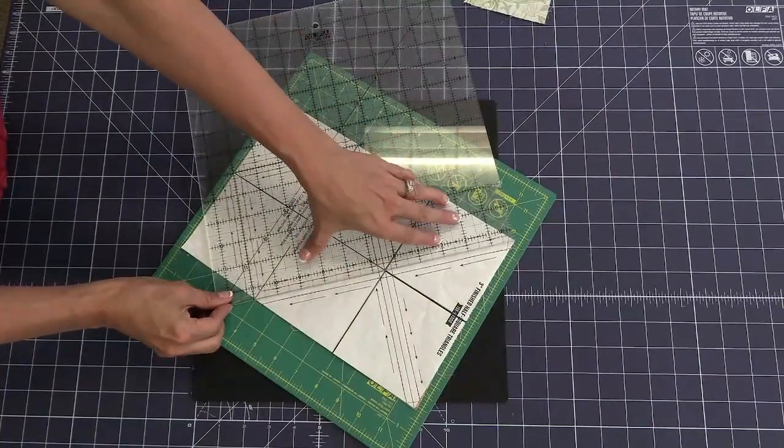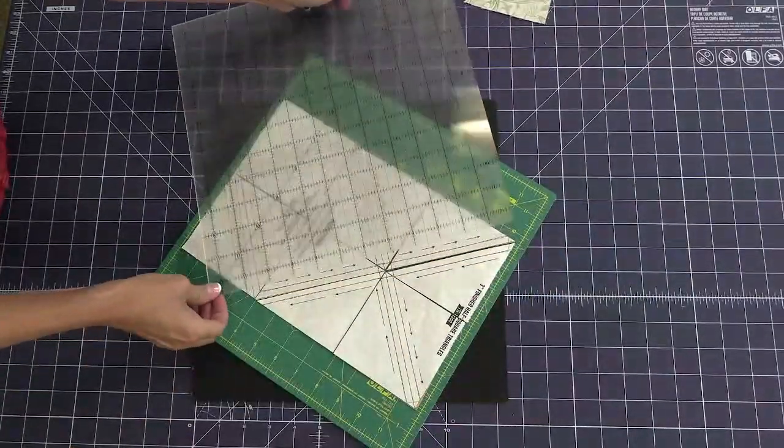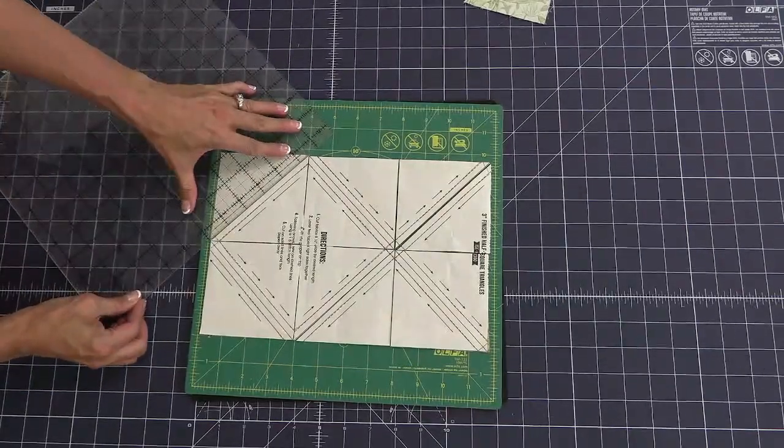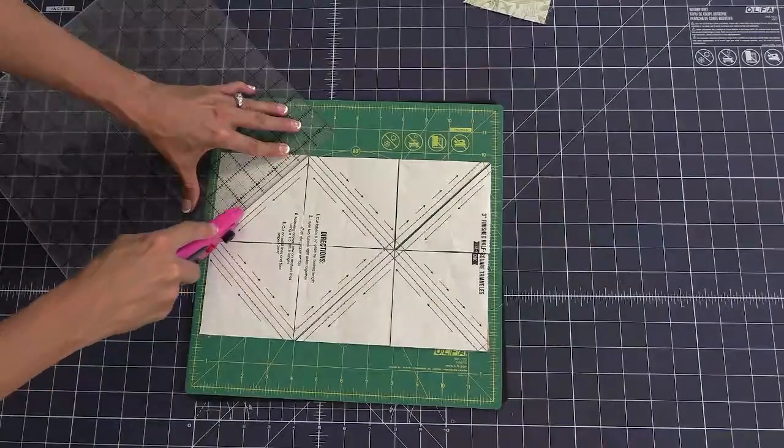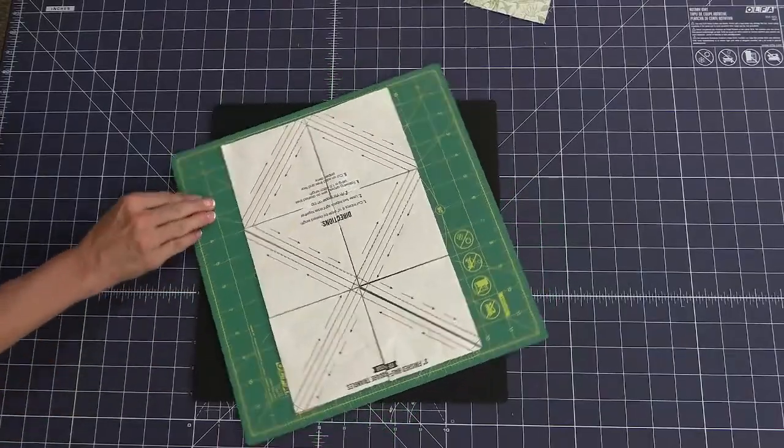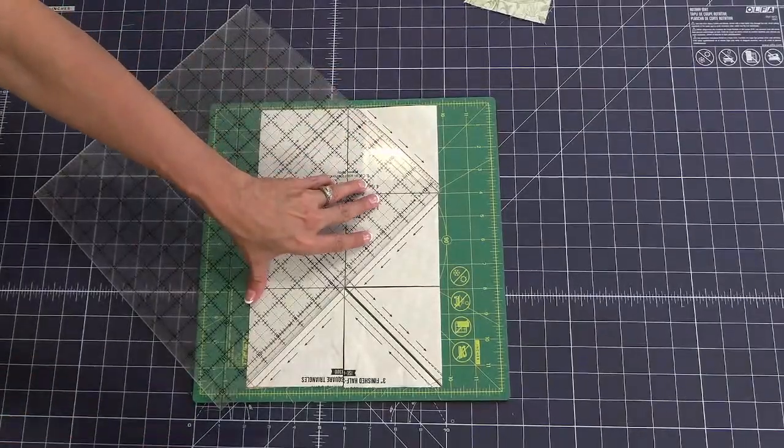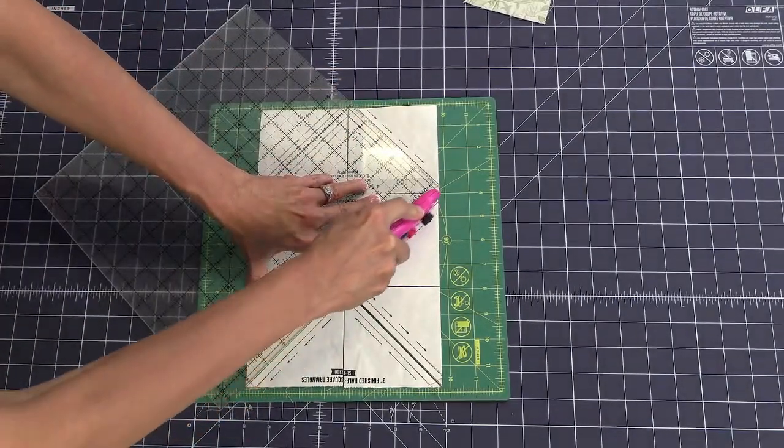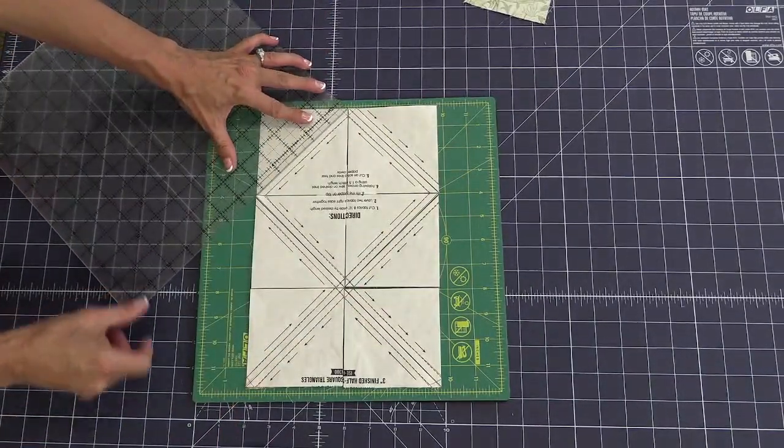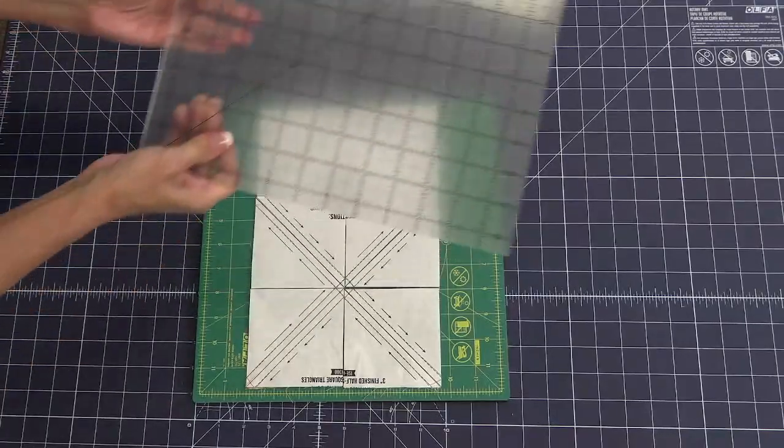Now I'm going to rotate my mat just a smidge. And I'm going to go through the solid lines that are in between my stitch lines. Almost done. Rotating that mat again. That's why I really love that rotating mat. And one more. Let me show y'all what I have. It's pretty amazing.